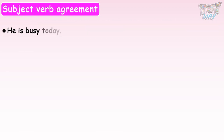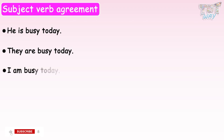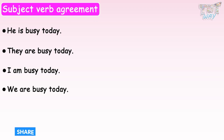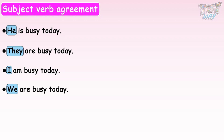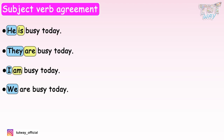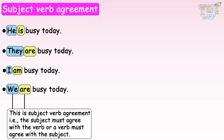He is busy today. They are busy today. I am busy today. We are busy today. Here you can see when the subjects are he, they, I, and we, we have used different helping words with different subjects. Is is used with he. Are is used with they. Am is used with I. Are is used with we. Why so? This is subject-verb agreement — the subject must agree with the verb.